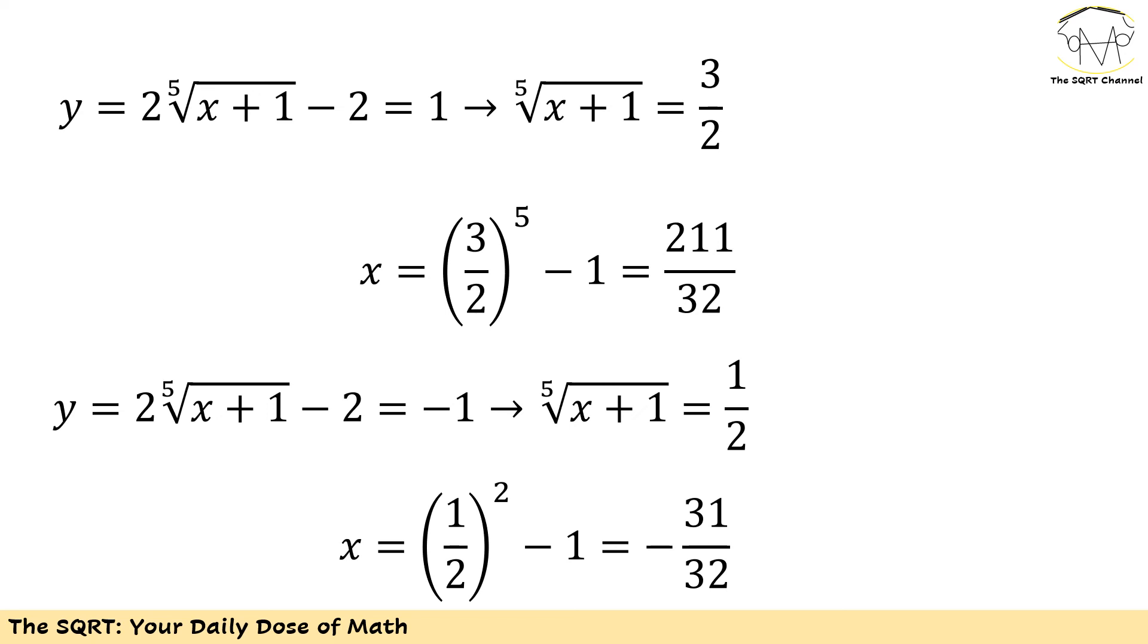For the case that y equals to 1, I will see the fifth root of x plus 1 is going to be 3 over 2, or x plus 1 is going to be power of 5 of 3 over 2, and x is going to be (3/2)^5 minus 1.